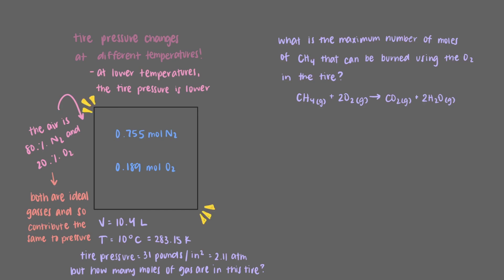Step two is to figure out what change will happen. We were just told this information. So now we can solve. There are 0.189 moles of oxygen in the beaker, and one mole of methane reacts for every two moles of oxygen reacting. That means that 0.0945 moles of methane can be burned using the air in the tire.